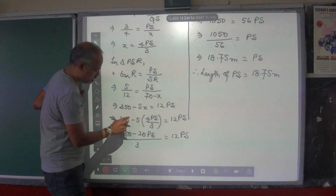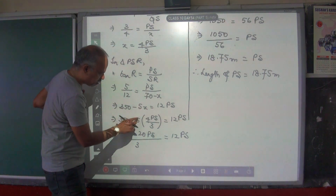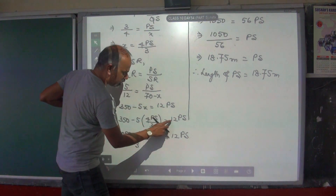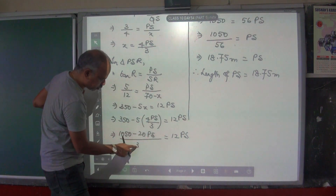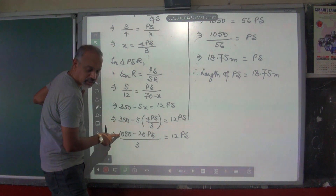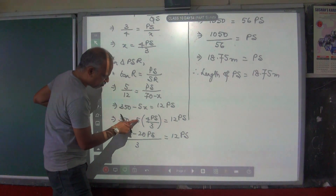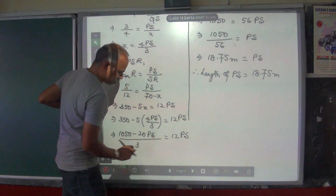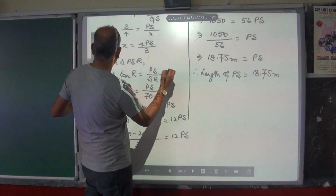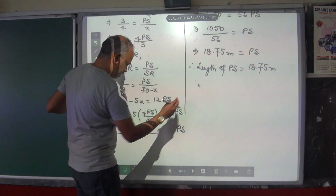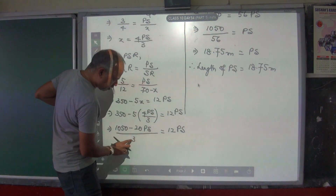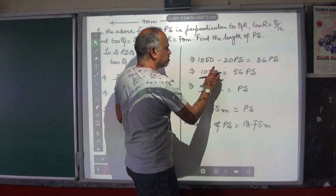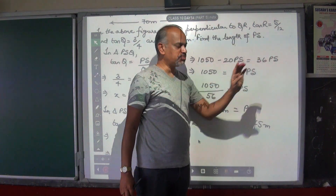Substituting X: 350 minus 5 times (4PS divided by 3) equals 12PS. Find the LCM, which is 3. Multiply through: 1050 minus 20PS equals 36PS. Move 20PS to the other side: 1050 equals 36PS plus 20PS, which gives you 56PS.